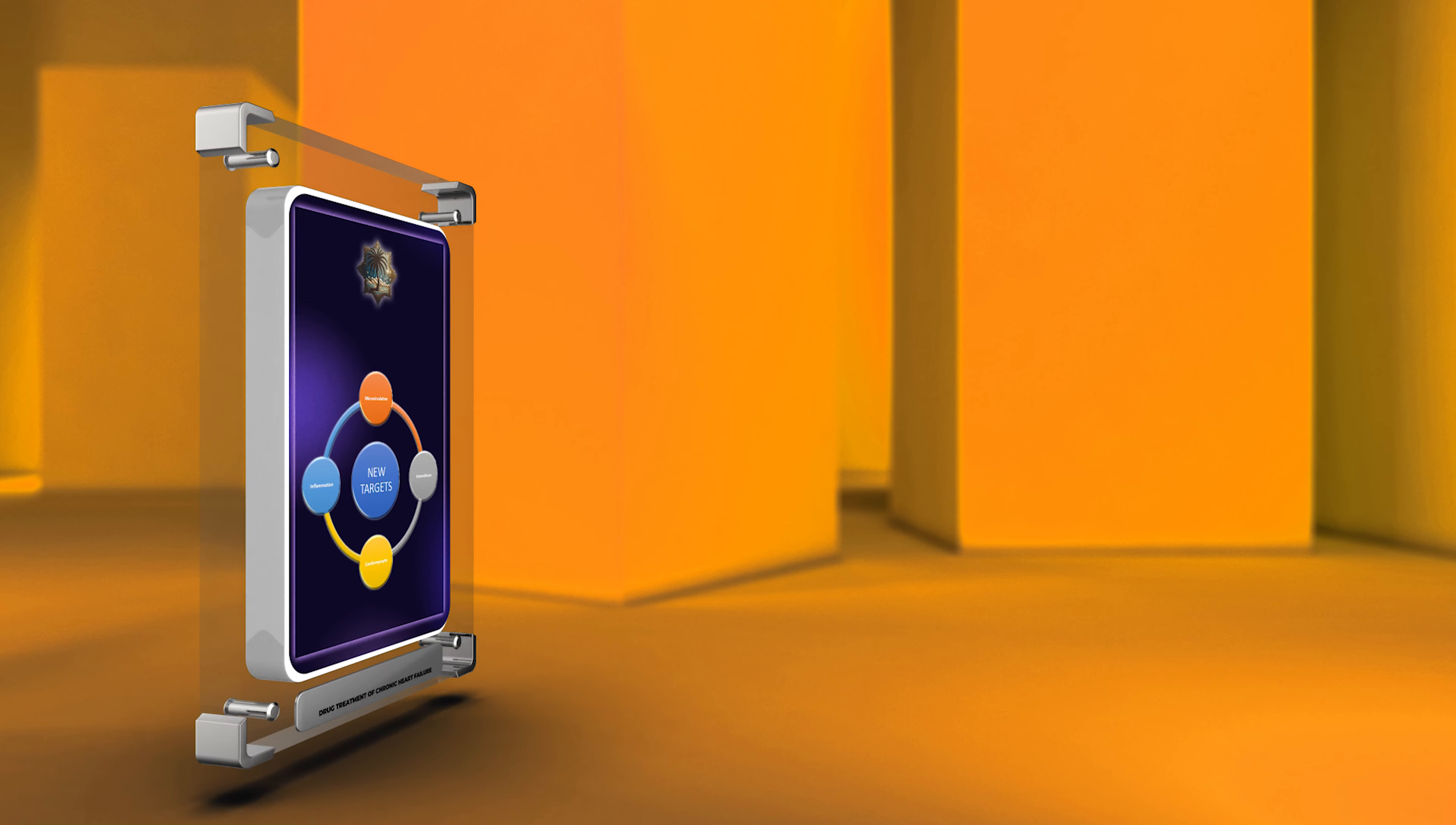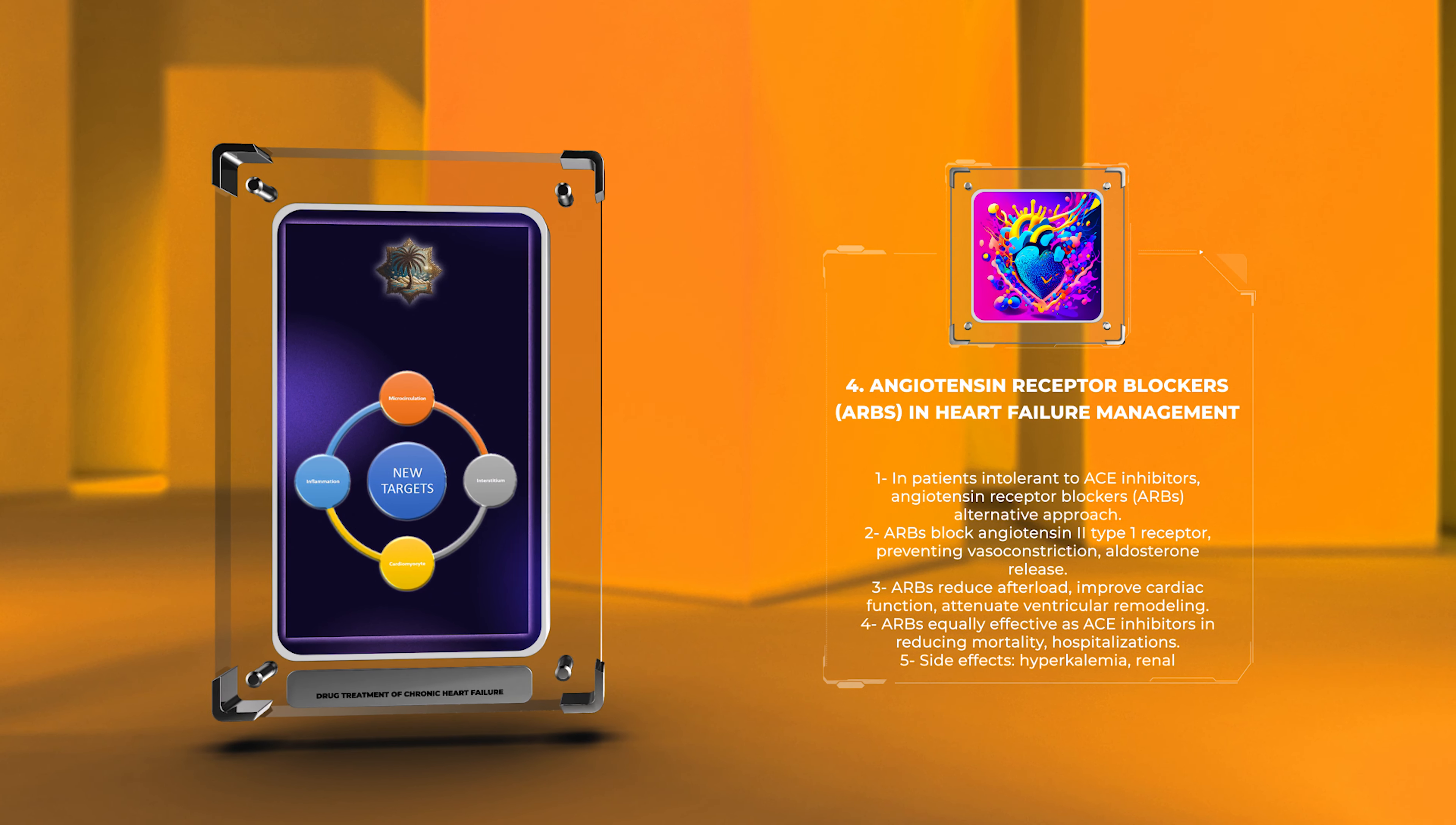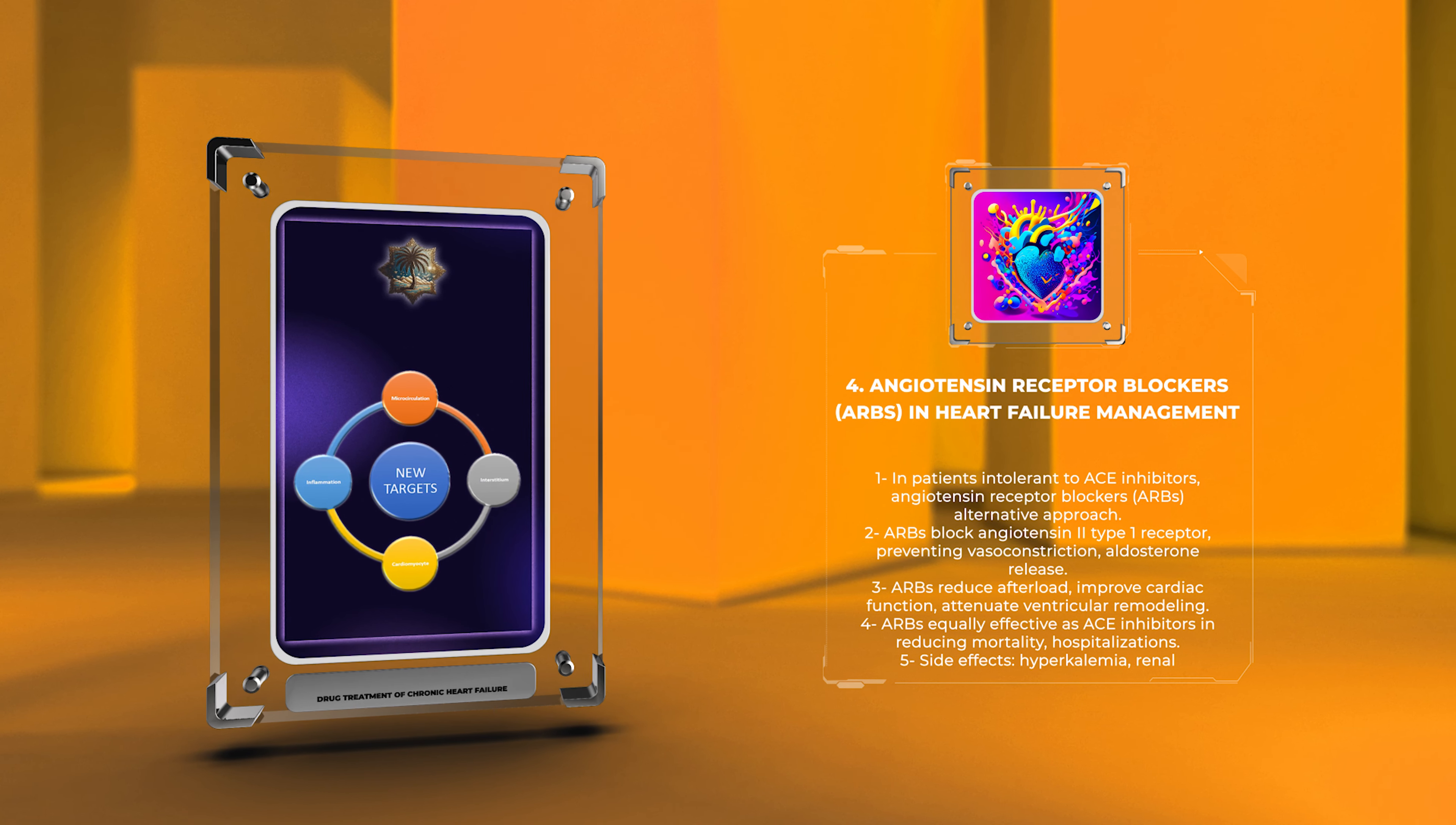In patients intolerant to ACE inhibitors, angiotensin receptor blockers, ARBs, offer an alternative pharmacological approach to inhibit the effects of angiotensin II. ARBs block the angiotensin II type 1 receptor, preventing vasoconstriction and aldosterone release.